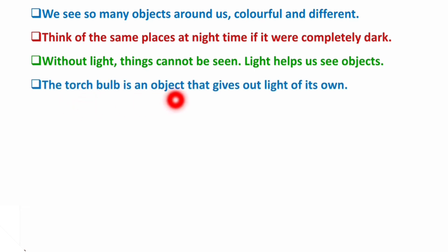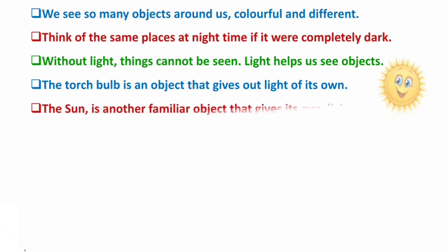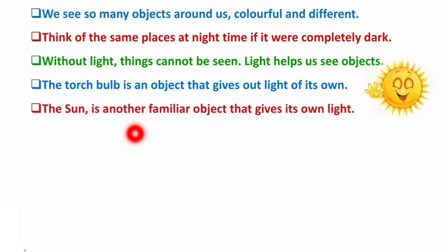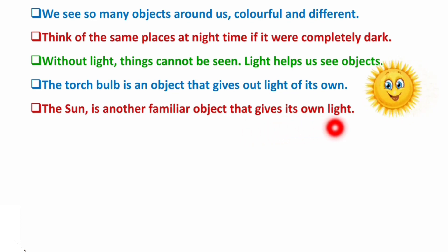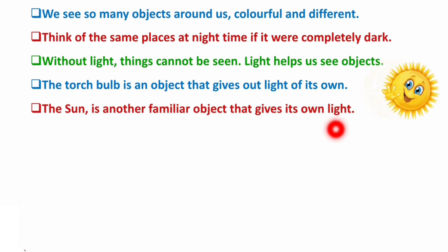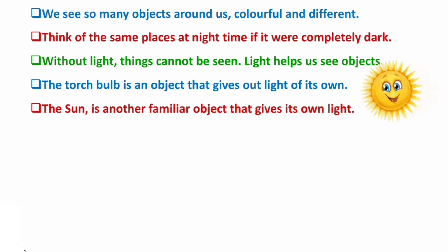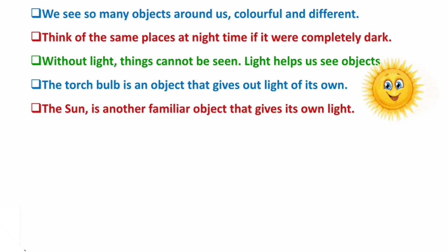The torch bulb is an object that gives out light of its own. If you have the torch bulb on, light is emitted — it gives its own light. The sun is another familiar object that gives its own light. Both of these objects have their own source of light; they emit light from themselves.